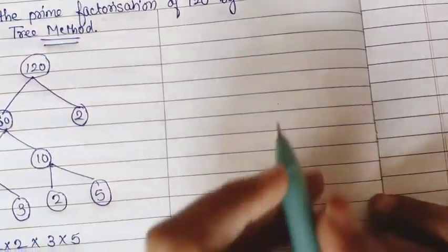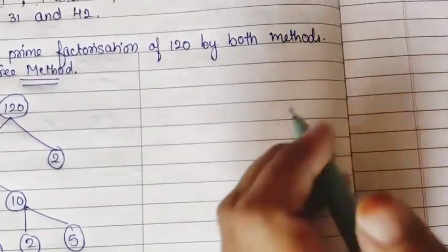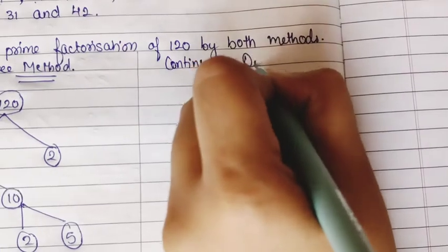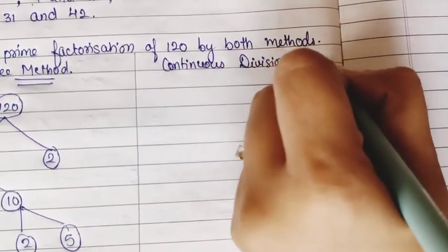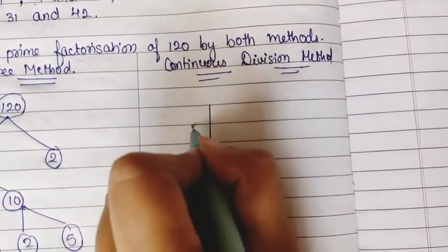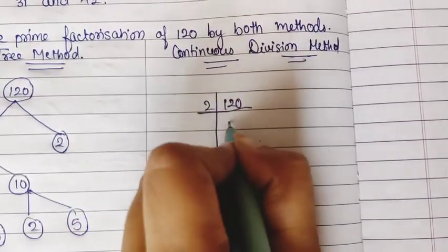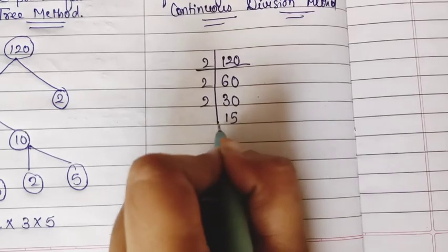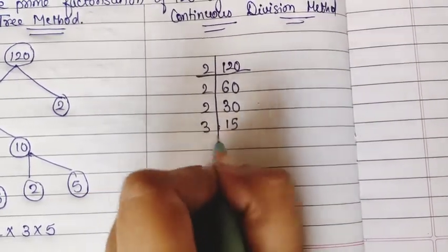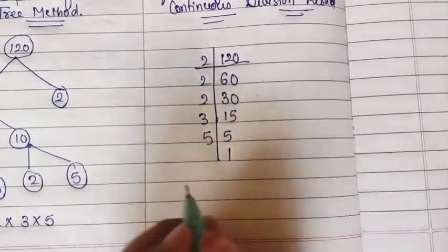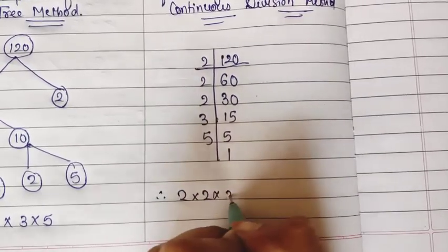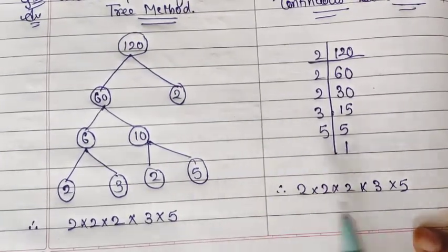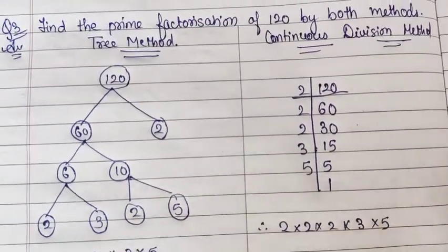Now one more method is there — the continuous division method. We start with 120 divided by 2 = 60, then 60 ÷ 2 = 30, then 30 ÷ 2 = 15. Now 15 comes, so we take table of 3: 15 ÷ 3 = 5, then 5 ÷ 5 = 1. So the answer is again 2 × 2 × 2 × 3 × 5. Both methods give the same answer — 1, 2, 3 twos, then 3 and 5. By any method you do, you will get the same prime factorization.